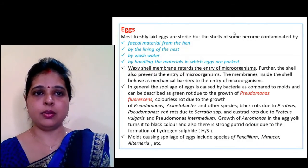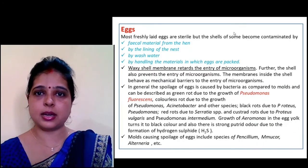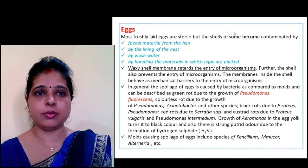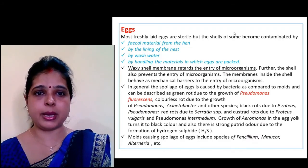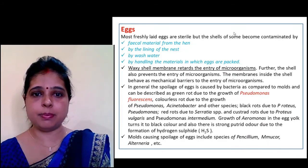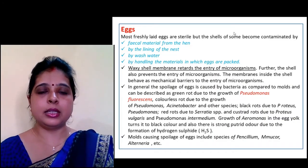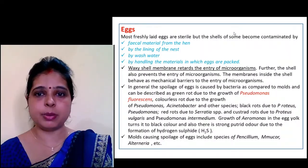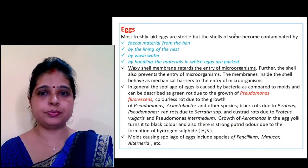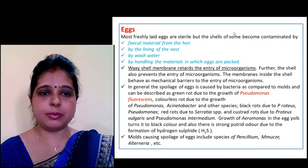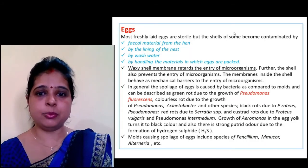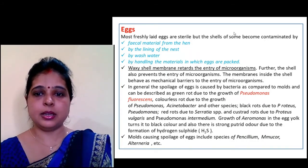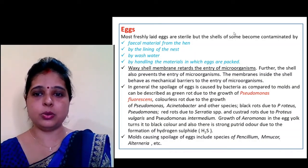Most freshly laid eggs are sterile, but contamination comes from fecal material from the hen, the lining of the nest, wash water, and handling of packing materials. Spoilage of eggs is generally caused by bacteria more than molds. It can be described as a green rot due to growth of Pseudomonas fluorescens.